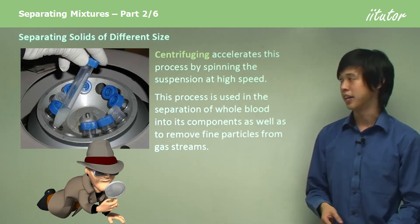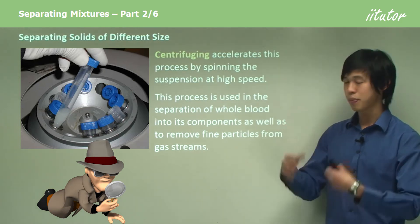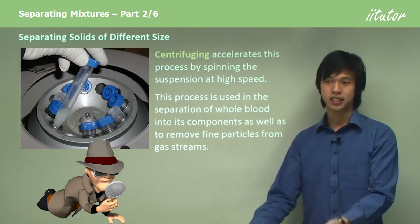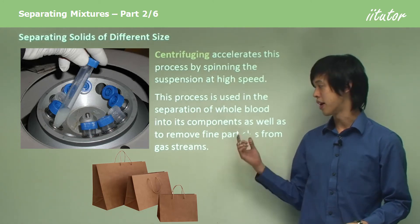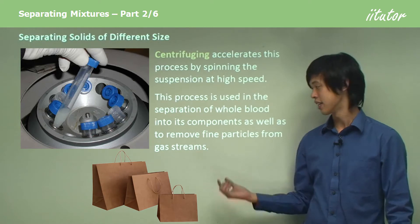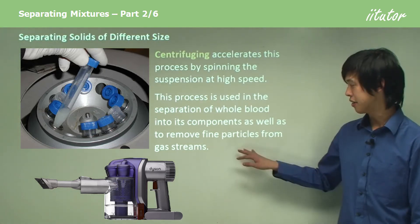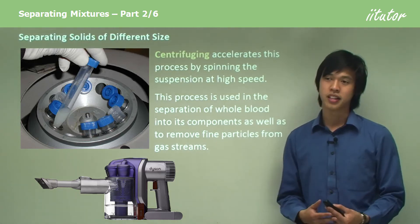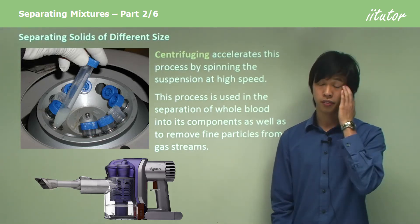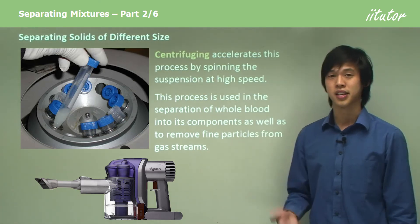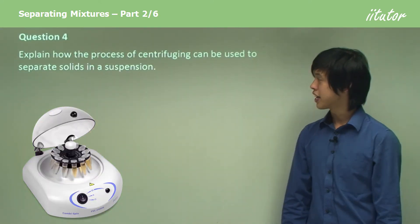Because some particles are more dense, they'll fall to the end of the tube faster than the less dense particles. Centrifuging is used to separate solids in a suspension — for example, in the separation of blood. When you donate blood, they can separate it into blood cells and different proteins so each part can be used individually. It's also used to remove fine particles from gas streams. A similar method is the cyclonic action in a Dyson vacuum cleaner, which operates the same way to extract dust.